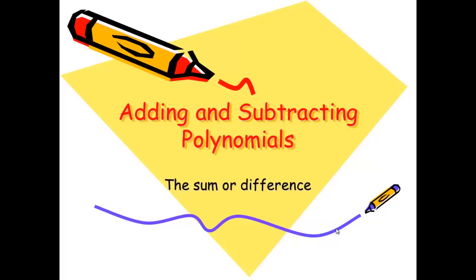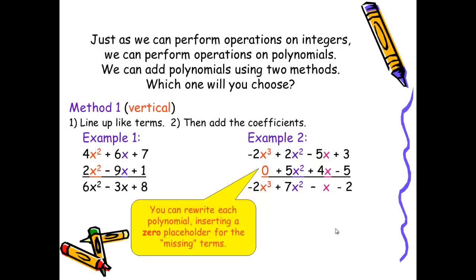Next, we're going to talk about adding and subtracting polynomials. This means finding the sum or difference. And in short, it just means combining like terms. Just as we can perform operations on integers, we can also perform the same operations on polynomials. We can add polynomials using two methods. Which one will you choose?